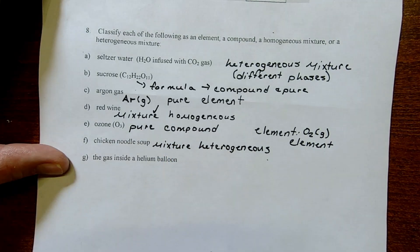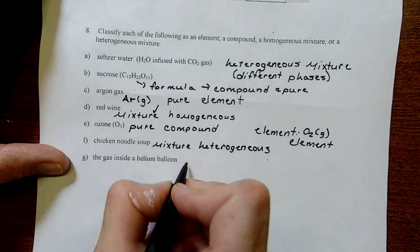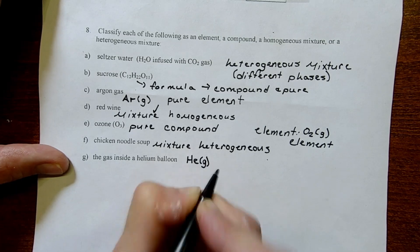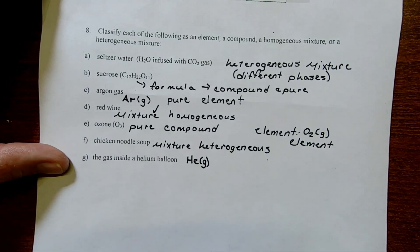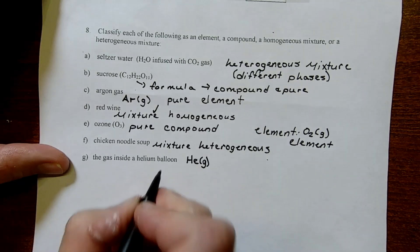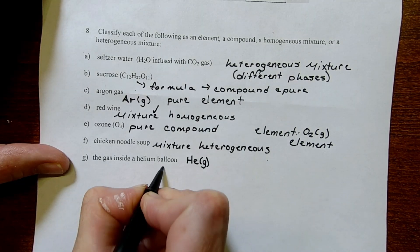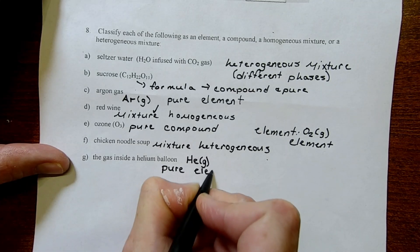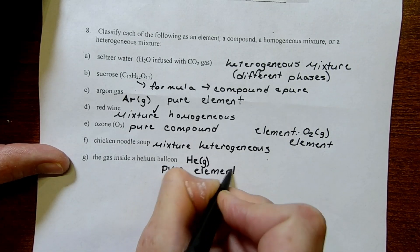And the gas inside a helium balloon, just the gas, is He(g). Since we can look up the elemental symbol on the periodic table and describe it like that, I'm going to call it a pure element.